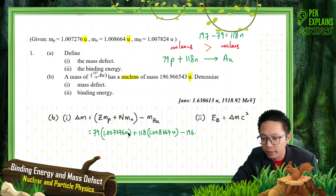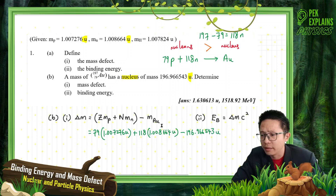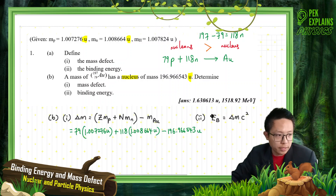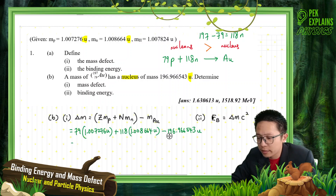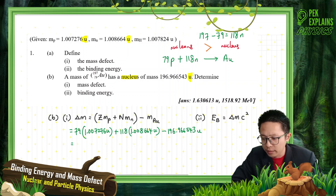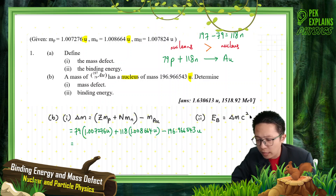Minus the mass of aurum itself, which is 196.966543 — it's a very lengthy number, but that's how it is. After calculating, the mass defect I get is 1.630613 atomic mass units. Maintain as many decimal places as possible, because in this chapter we need very accurate answers.